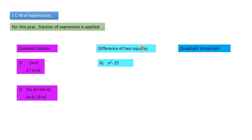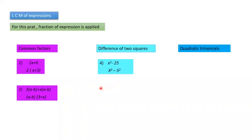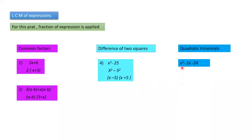Next, difference of two squares. You need two square numbers and a subtraction sign. For x² − 25, you can write it as x² − 5². The factors of the difference of two squares are (x − 5)(x + 5). You need good knowledge of factorization, otherwise you can't do this part.